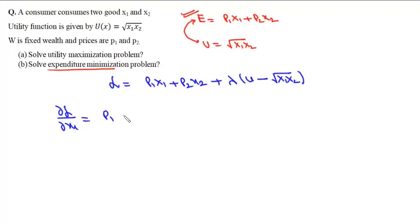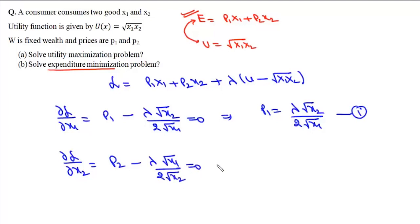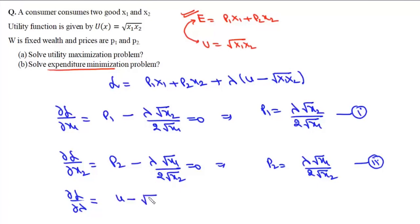Differentiating with respect to x1 gives p1 − λ·√x2/(2√x1) = 0, so p1 = λ·√x2/(2√x1), which is our first equation. Differentiating with respect to x2 gives p2 = λ·√x1/(2√x2), which is our second equation. Differentiating with respect to λ gives u − √(x1·x2) = 0, i.e., u = √(x1·x2), our third equation.